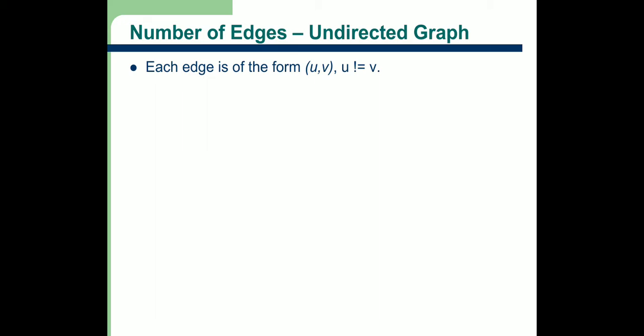We know that each edge is of the form u, v, where u is not equal to v. That means each edge connects two different vertices — u and v are not the same. In normal cases, we can say u and v are not equal.